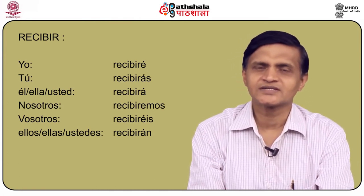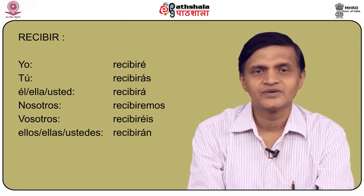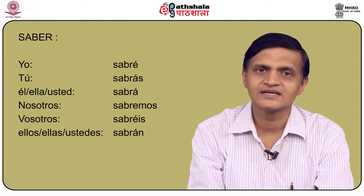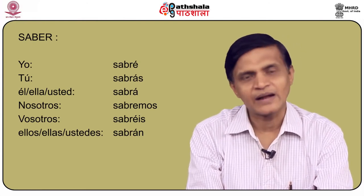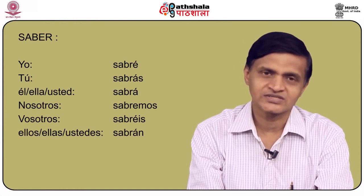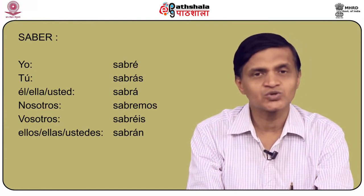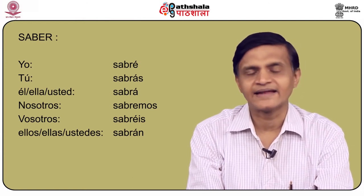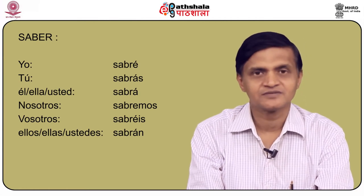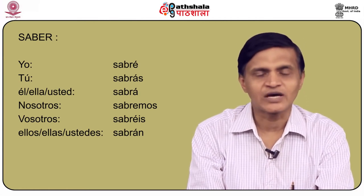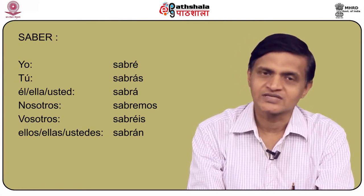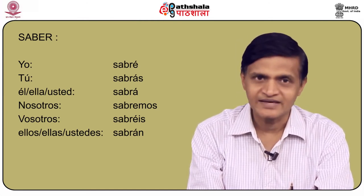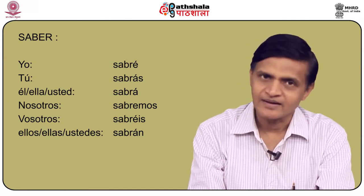How do we conjugate a verb like saber in the future? We conjugate saber in the following manner: yo sabré, tú sabrás, él/ella/usted sabrá, nosotros sabremos, vosotros sabréis, and ellos/ellas/ustedes sabrán. Sabremos without accent, sabréis and sabrán.